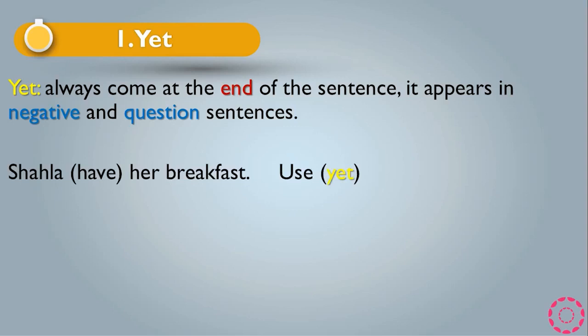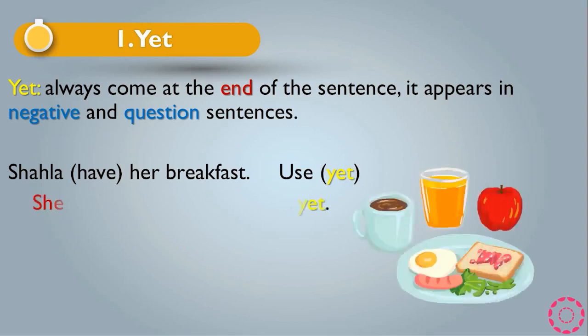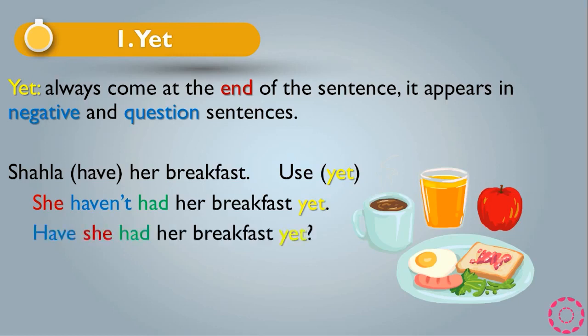For example: 'Shahla has had her breakfast' — use yet. In the negative it becomes: 'She hasn't had her breakfast yet.' And as a question: 'Has she had her breakfast yet?' As you can see, yet is used in both the negative sentence and the question.